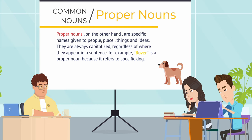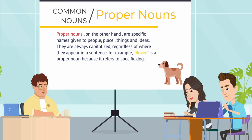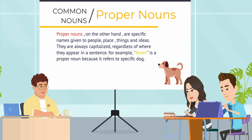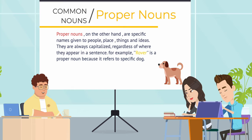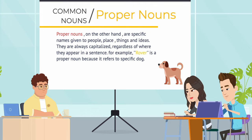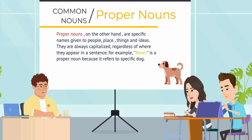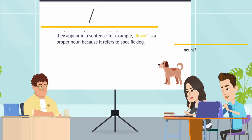Proper nouns, on the other hand, are specific names given to people, places, things, and ideas. They are always capitalized, regardless of where they appear in a sentence. For example, 'Rover' is a proper noun because it refers to a specific dog.